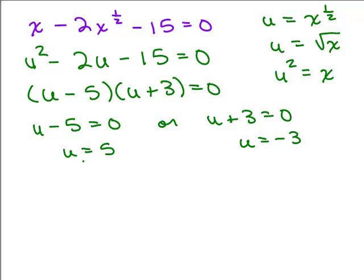What was u? It was the square root of x. So that means the square root of x is 5. And to solve that, you can just square both sides. So I get x equals 25.